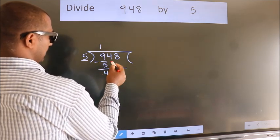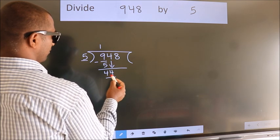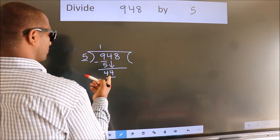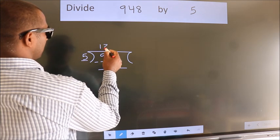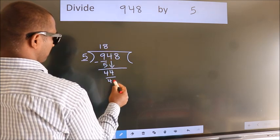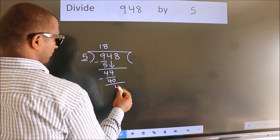After this, bring down the next number. So 4 down, giving us 44. A number close to 44 in the 5 table is 5 eights, which is 40. Now we subtract. We get 4.